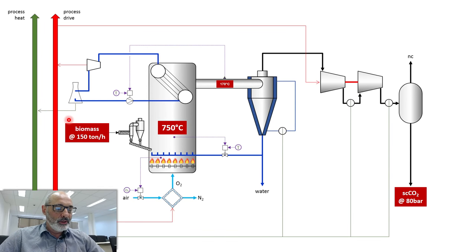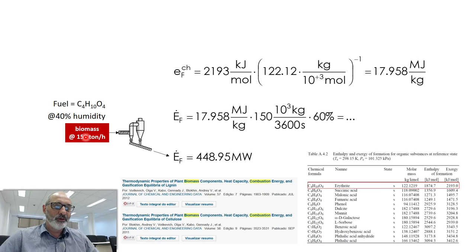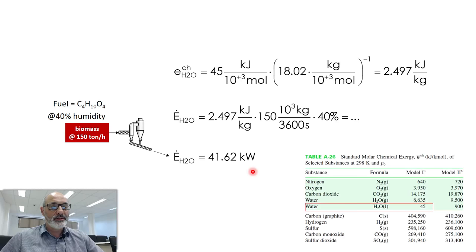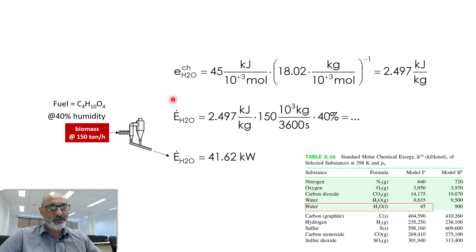Just to use another word in place of exergy — that's the amount of electricity equivalent being carried by biomass. The result is almost 500 megawatts. So we already have the input. Now, if 40% is water, what is the amount of exergy carried by this water? It's liquid water — not corresponding to the natural state of water in the atmosphere — so it also has a certain amount of exergy. The exergy content of liquid water is 45 kilojoules per kilomole.